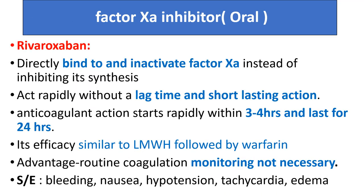Oral factor Xa inhibitor rivaroxaban directly binds to and inactivates factor Xa instead of inhibiting its synthesis. It acts rapidly without a lag time and has a shorter-lasting action. Anticoagulant action starts rapidly within 3 to 4 hours and lasts for 24 hours. Its efficacy is similar to low molecular weight heparin followed by warfarin. Advantages: routine anticoagulant monitoring is not necessary. Side effects include bleeding, nausea, hypotension, tachycardia, and edema.